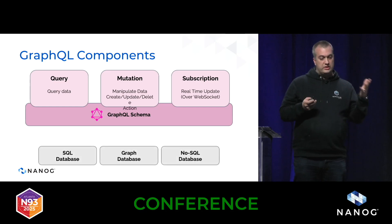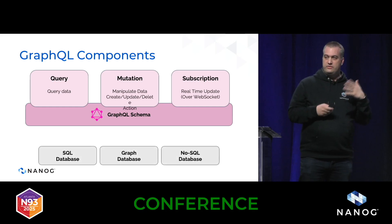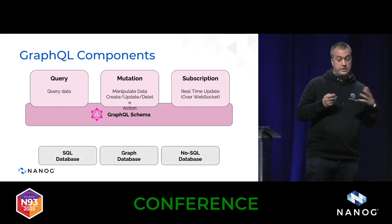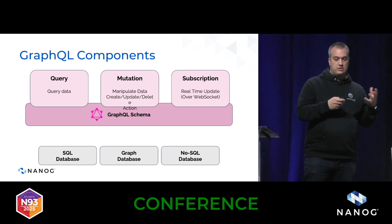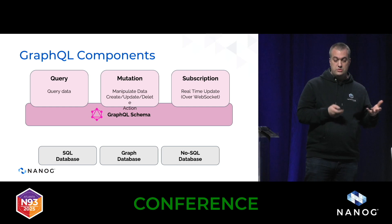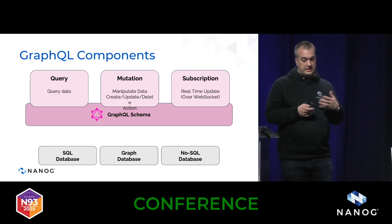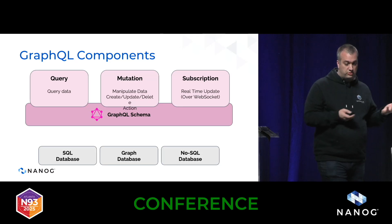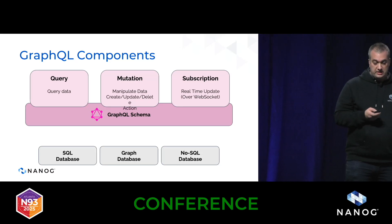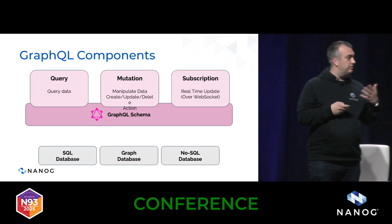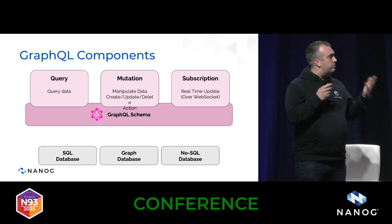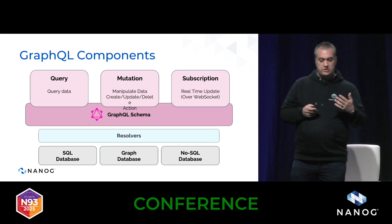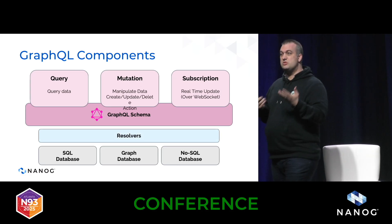GraphQL itself — even if it's confusing because of the word 'graph' — is not specific to any particular type of database backend. It can work on top of a SQL database, a graph database, or a NoSQL database. In the GraphQL ecosystem we usually talk about resolvers, which are really only something developers building GraphQL APIs need to worry about.